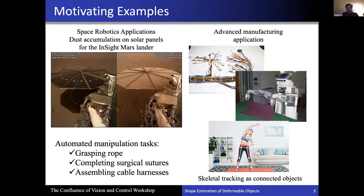Some of the traditional applications include skeletal tracking, where you can represent joints as connected objects, which collectively form a deformable object. There are many motivating applications for this, and shape estimation can be useful for actually manipulating these different objects in various application areas like medical robotics, manufacturing, and so on.